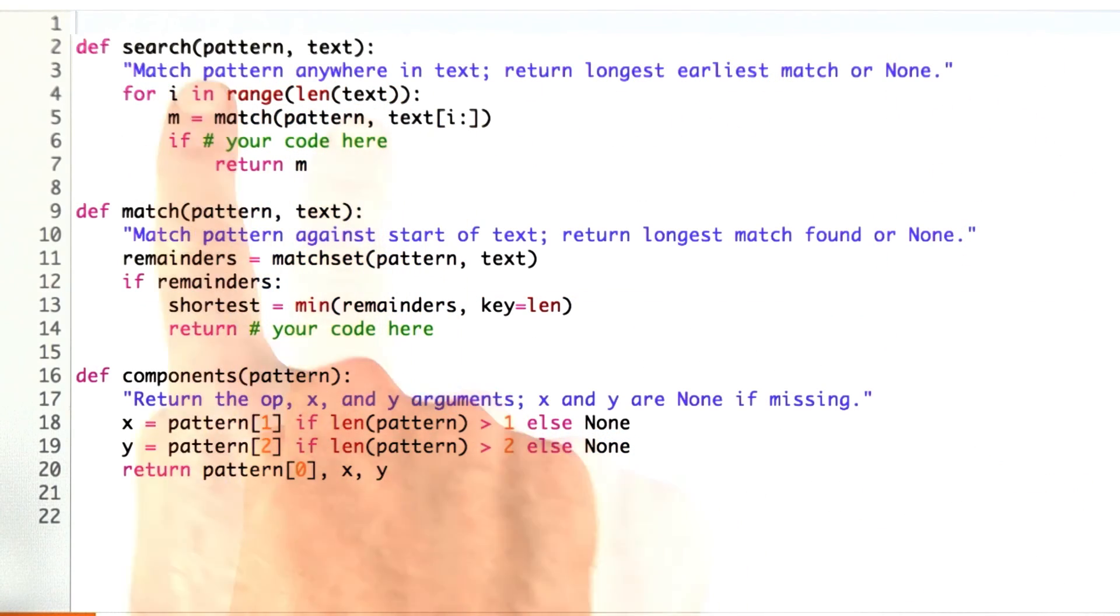So here I've written versions of search and match. We already wrote matchset. The one part that we missed out was this components that pulls out the x, y, and op components out of a tuple. And I've left out two pieces of code here that I want you to fill in.